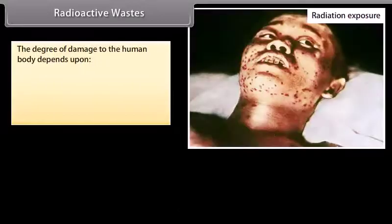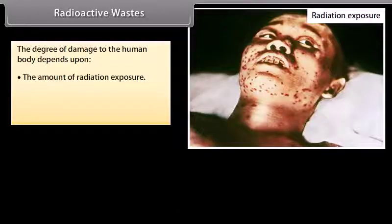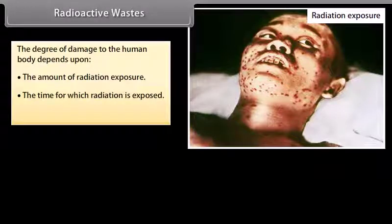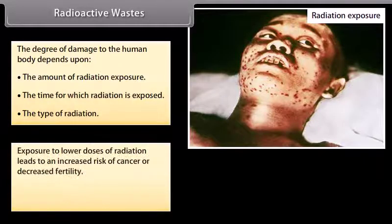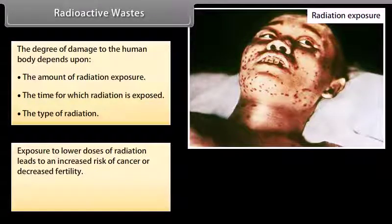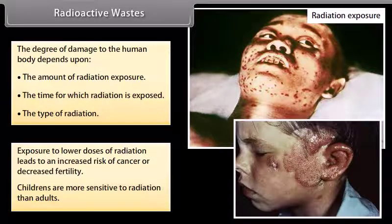The degree of damage to the human body depends upon the amount of radiation exposure, the time for which radiation is exposed, and the type of radiation. Exposure to lower doses of radiation leads to an increased risk of cancer or decreased fertility. Children are more sensitive to radiation than adults.